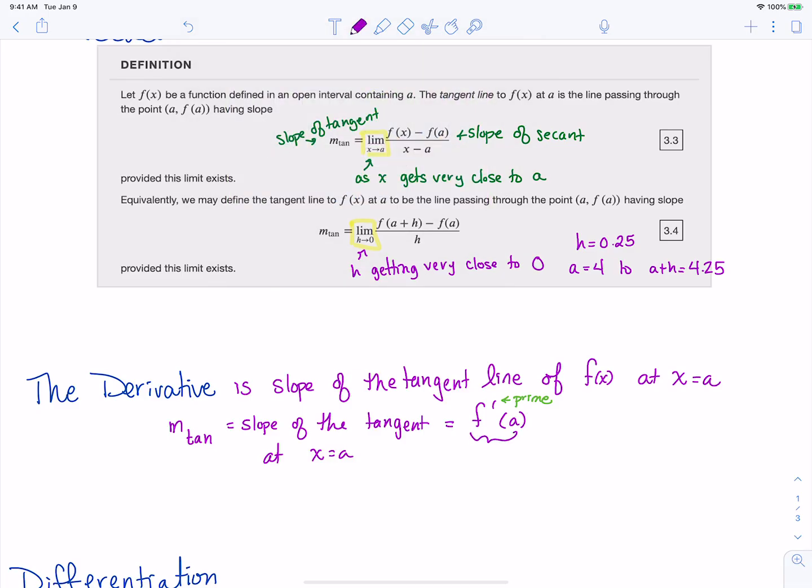This is the derivative of our function f(x) at x equals a. There'll be some different notations that we see, but we'll just use this one right now for a little while. You probably know or possibly know that there are other notations we can use for the derivative.